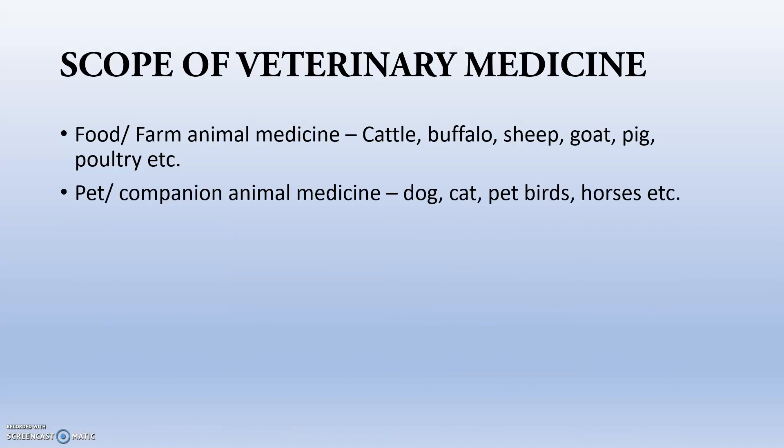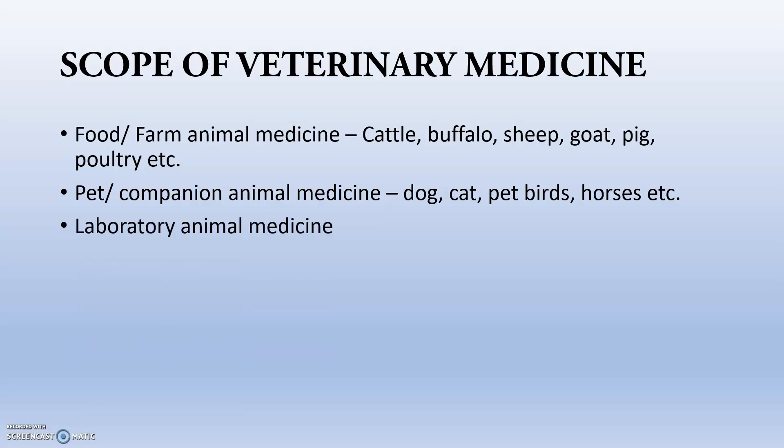Next is pet or companion animal medicine — we treat companion animals and give them medicines to prevent future disorders. Companion animal medicine is very prominent in India now. Next is laboratory animal medicine — research-oriented laboratory animals are treated to ensure proper experimental results.